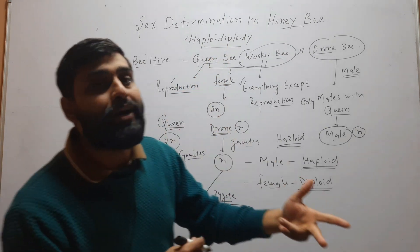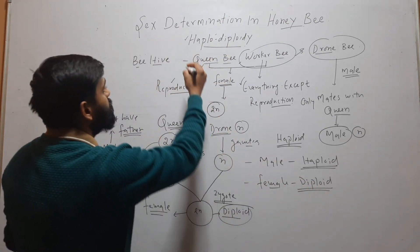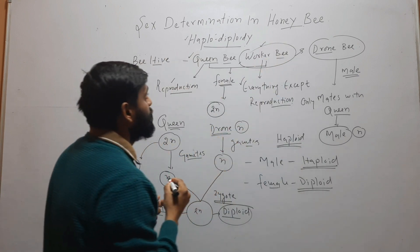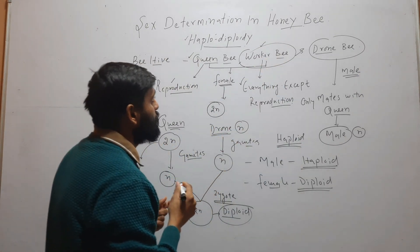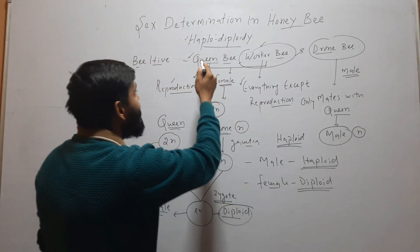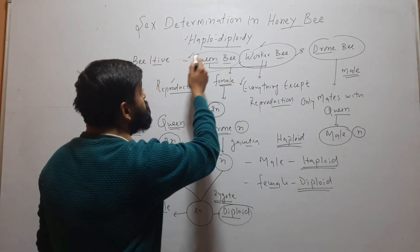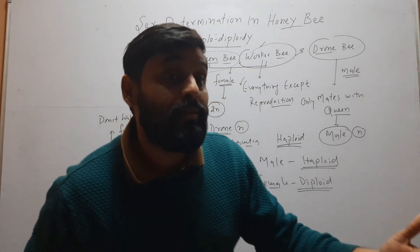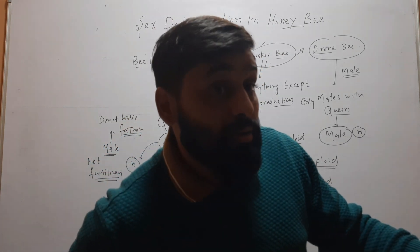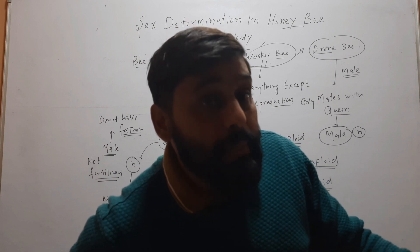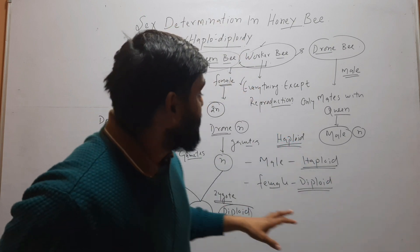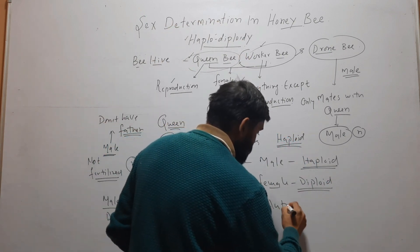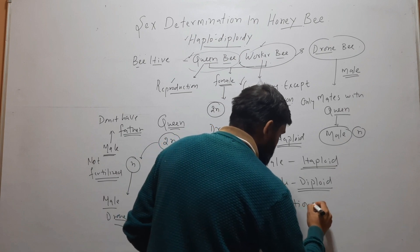The female further has two categories: one is queen bee and another is worker bee. Why does the queen bee reproduce while the worker bee performs other roles? It depends on their nutrition. Thank you.